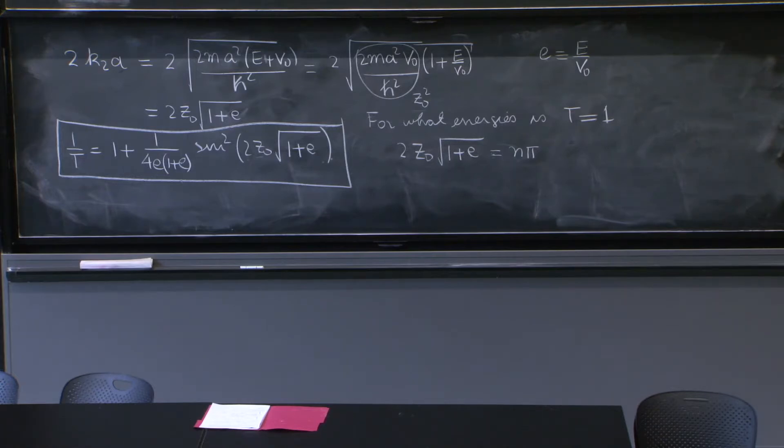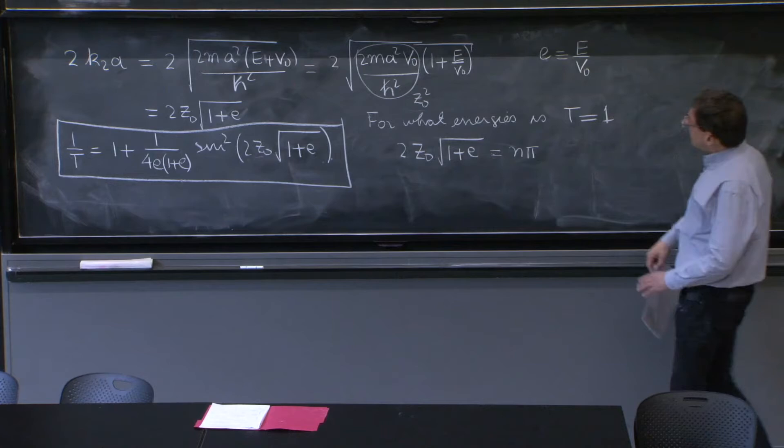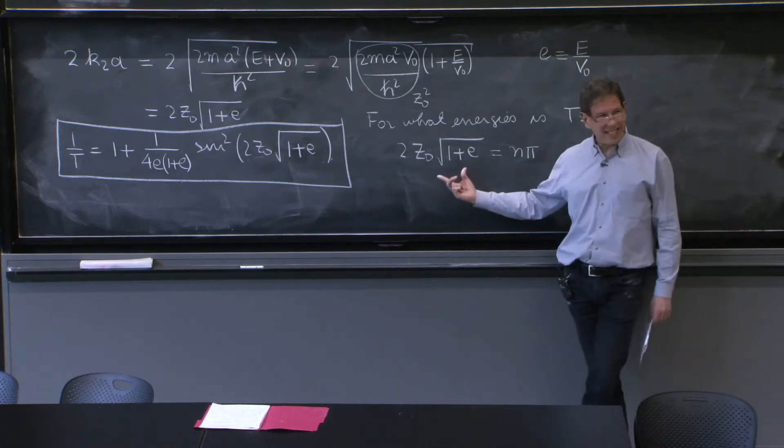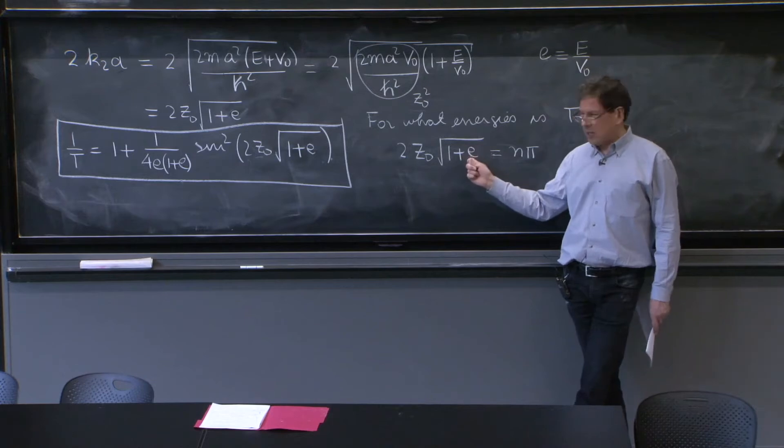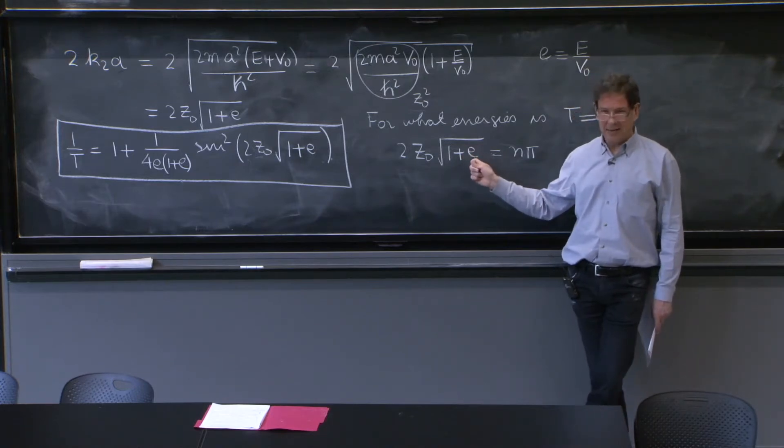Now, you could say, what multiple of pi? Well, it would be 0, 1, 2, 3, not obvious, because the only thing you have here to adjust is the energy. The energy is positive, and that's that little e in here.